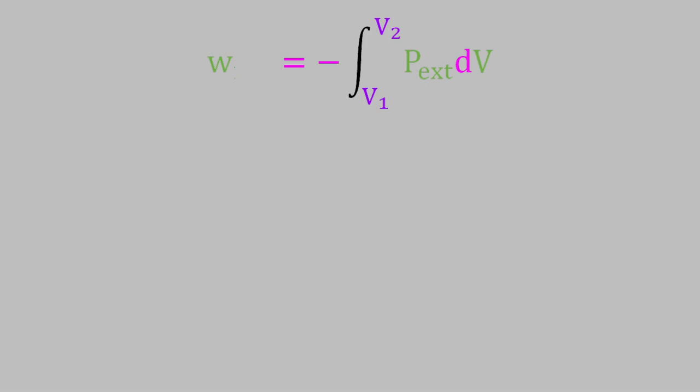First of all, I'll put the subscript rev on the work to remind us that we're calculating work for a reversible process. The results that we're about to get wouldn't be true for an irreversible process. For an irreversible process, we would continue to use this equation, which we got before. For the reversible work, let's first remember that the external and internal pressures are only infinitesimally different, which means that they're essentially equal. For that reason, we can replace P_external with P_gas. If the gas is behaving like an ideal gas, we can now use the ideal gas law. Remember, the ideal gas law says that PV equals nRT. So we can replace P_gas with nRT over V.